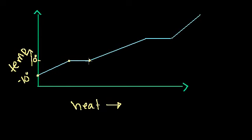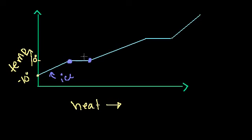At 0 degrees, something interesting happens: the added heat does not increase the temperature of the ice anymore. What's happening is that heat energy is being used to break the lattice structure — to add potential energy to the ice, or essentially to melt it. At 0 degrees you can have either water or ice. To turn ice into water you add heat; to turn water into ice you take heat out.